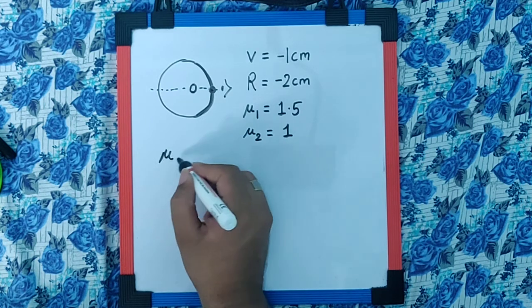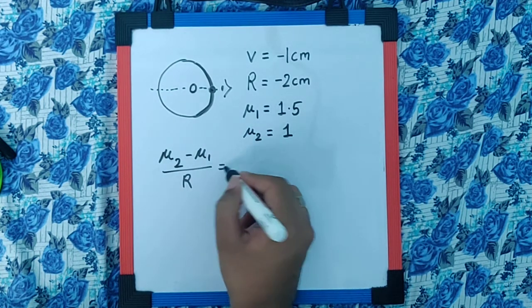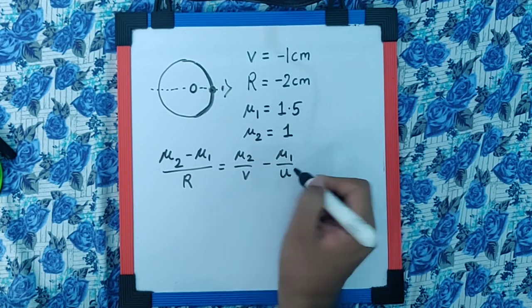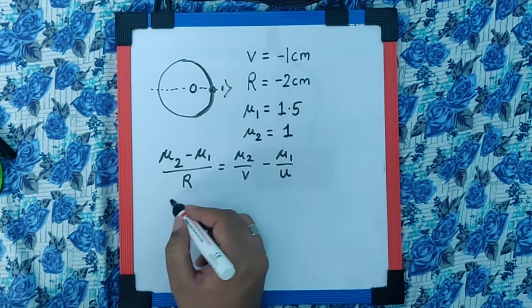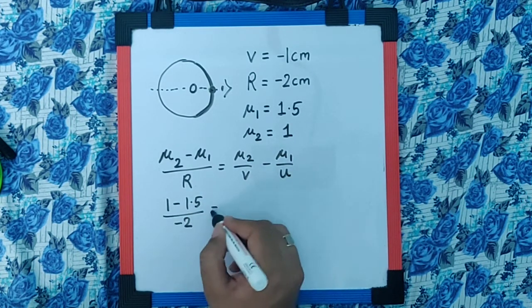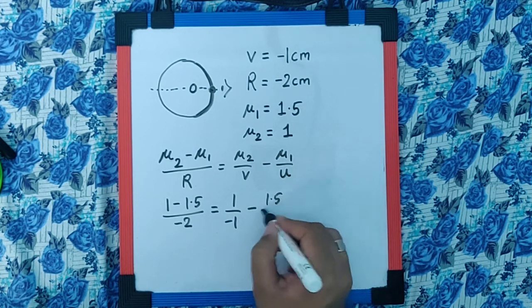Now using the formula of refraction at single curved surface we get mu 2 minus mu 1 by R as mu 2 by V minus mu 1 by U. Now if we substitute the values we get 1 minus 1.5 upon negative 2 is equal to 1 upon minus 1 minus 1.5 upon U.